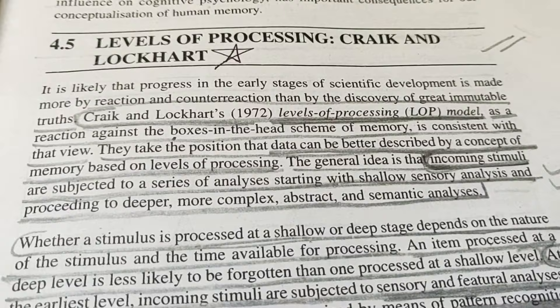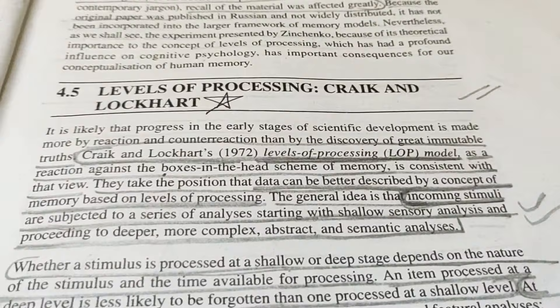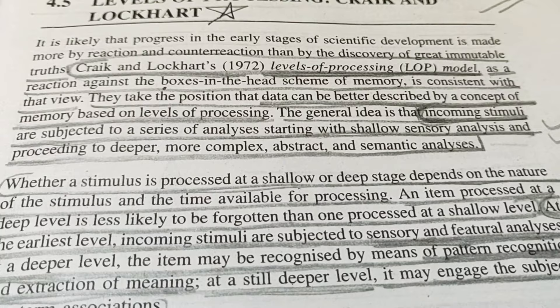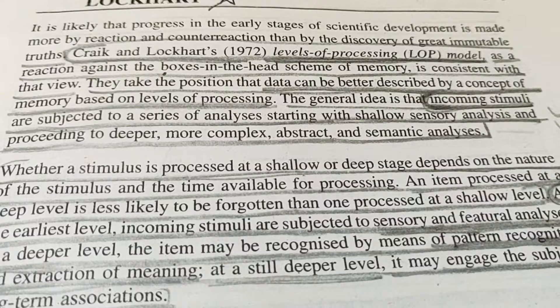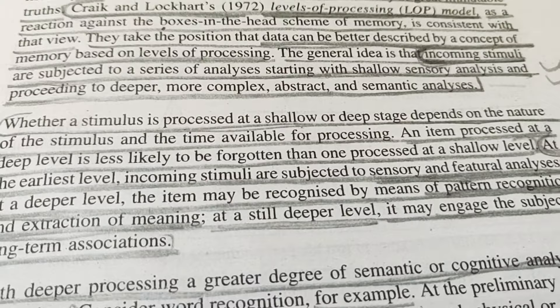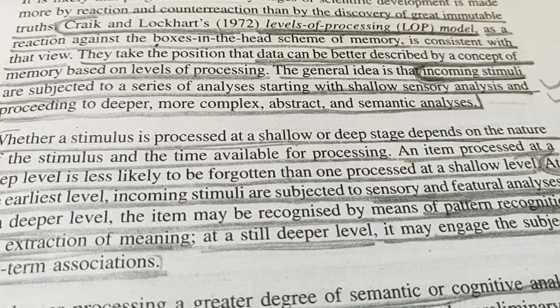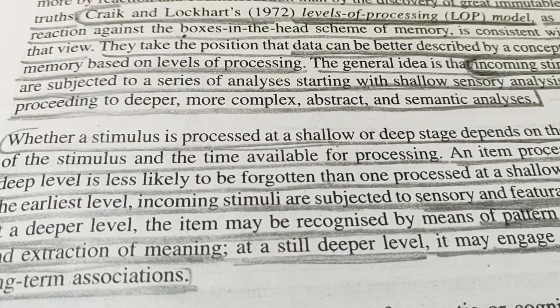Now, Level of Processing — Craig and Lockhart. Level of Processing is also called the LOP Model. This chapter is very important — every section has a star. The LOP Model tells you how data is better described in memory based on level of processing. They told that incoming stimuli go through a lot of analysis processes. When a stimulus arrives in sensory memory, it goes through sensory analysis first, then through a process of deeper analysis, and finally through complex, abstract, and semantic analysis — every kind of analysis.